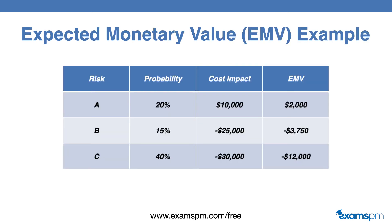Let's dive into one of the tools and techniques in more detail — an example of EMV. Here we have three risks on our project: A, B, and C, with their probability and impact values. To calculate the EMV, we simply multiply the probability by the impact. For risk A, we multiply 20% by the impact, which gives us $2,000. A positive risk gives a positive EMV, and a negative risk or threat gives a negative EMV. In the end, we sum everything up to know how much we need in our contingency reserve.